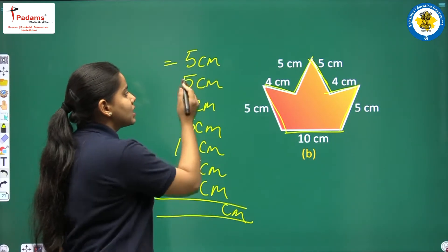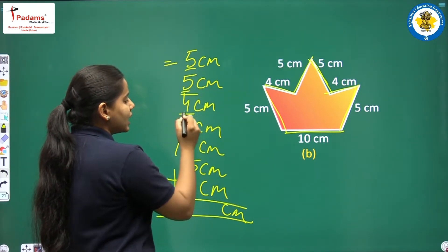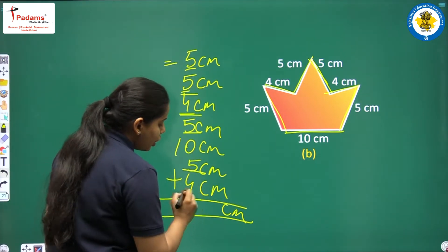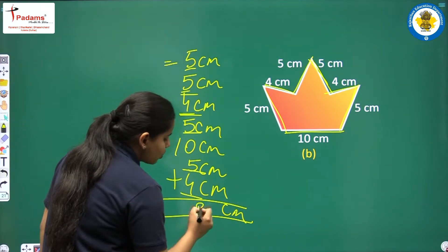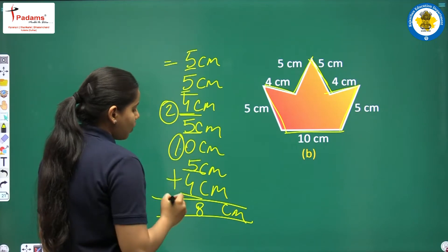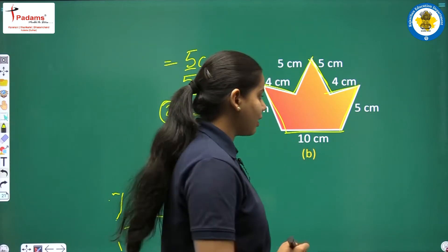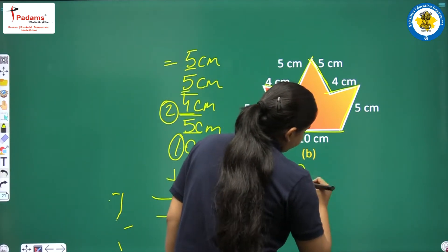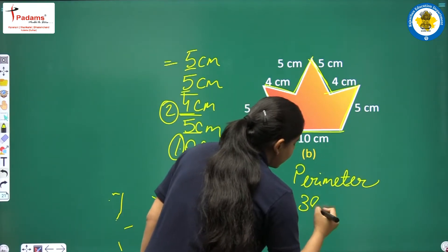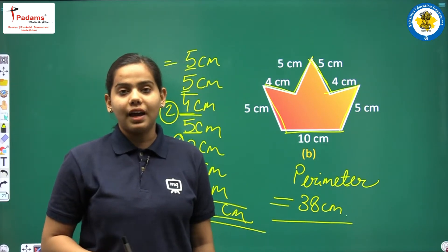Let us start from the ones place. 5 plus 5 is 10, plus 4 is 14, plus 5 is 19, plus 5 is 24, plus 4 is 28. Adding the tens: 2 plus 1 gives 3. So the answer is 38 cm. Since this is an irregular shape, we cannot apply any formula here.